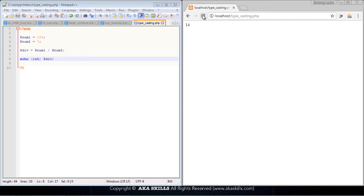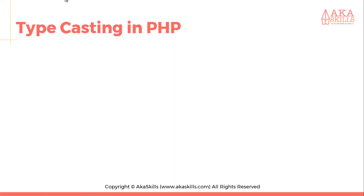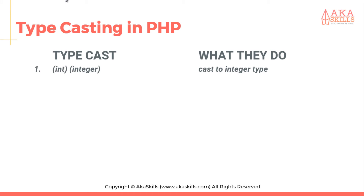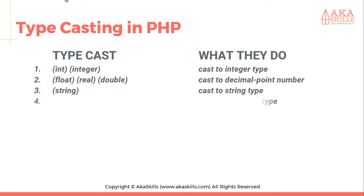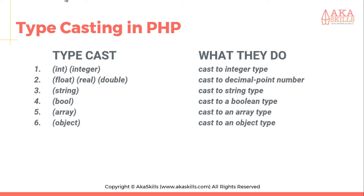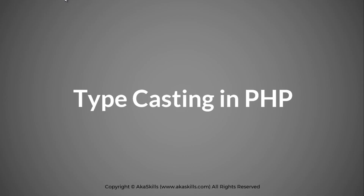That is how simple it is to make use of typecasting — converting one data type to another. In PHP, we have a host of type casts available. The one we just used casts to integer; you can use either of the two forms. The second one casts to a decimal point. The third casts to a string. The fourth casts to a boolean type. This one casts to an array. And finally, this casts to an object.